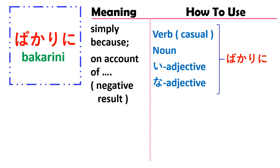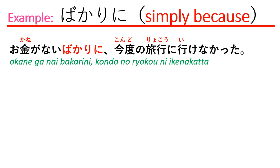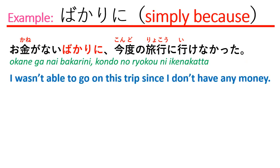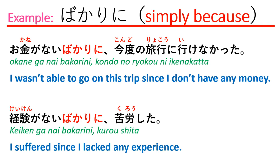The first sample: お金がないばかりに今度の旅行に行けなかった。 Which means: I wasn't able to go on this trip since I don't have any money. The second sample: 経験がないばかりに苦労した。 Which means: I suffered since I lack experience.